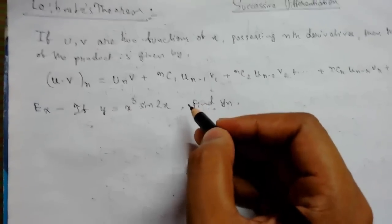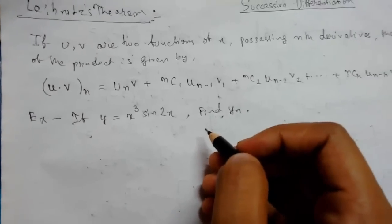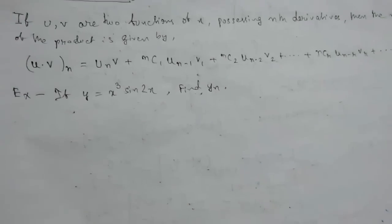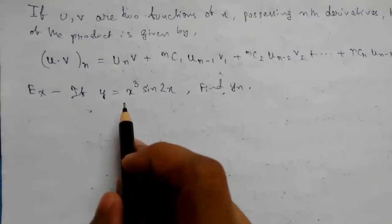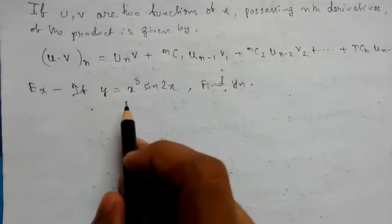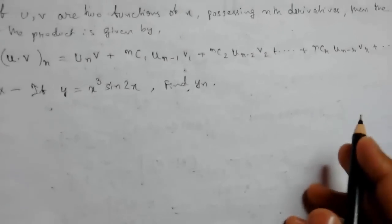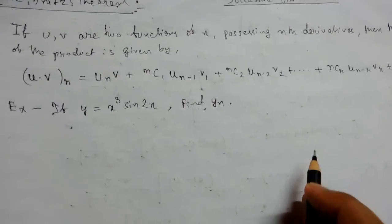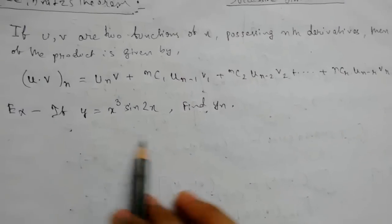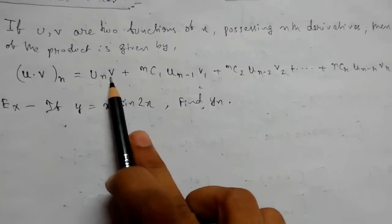We need to apply Leibniz theorem but we also need to think about it. We have to decide which function to be u and which function to be v so our formula gets as small as possible. If we take v as sin(2x) it will go on continuing.